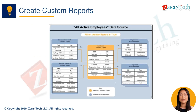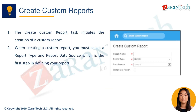To create a new custom report, navigate to the Create Custom Report task. When creating a report, the first step is to select the report type and data source. The data source drives the primary business object and starting filters for your report.